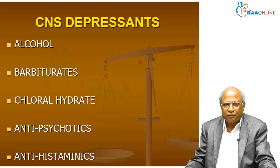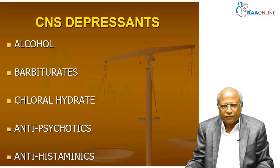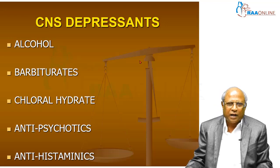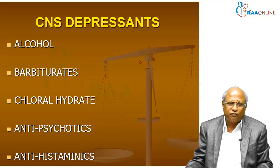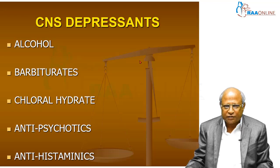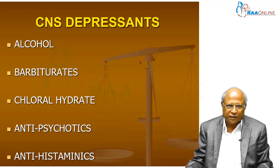Apart from alcohol, there are barbiturates, chloral hydrate, antipsychotic drugs, and antihistamine drugs. Among all these, alcohol gains importance because there are a lot of people who consume alcohol, leading to alcohol intoxication and alcohol poisoning. People die of alcohol because of various complications such as hypoglycemia, alcoholic hallucinations leading to suicidal tendencies, and violent behavior leading to homicidal tendencies.